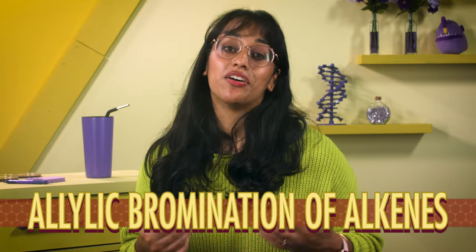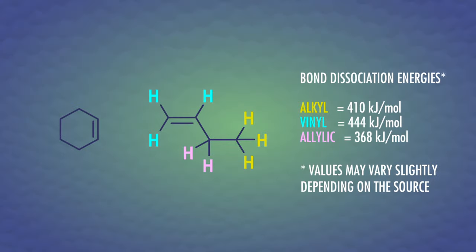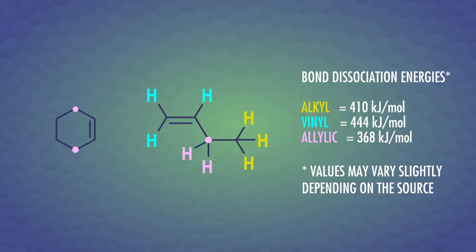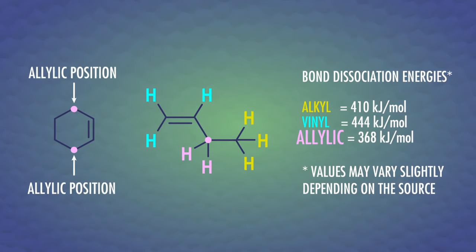Like we saw with superoxide and antioxidants, radical reactions can be in compounds with double bonds too. For example, the allylic bromination of alkenes. This is a more carefully planned party. Under the right conditions, alkenes can be brominated at the carbon next to the double bond, which is called the allylic position.